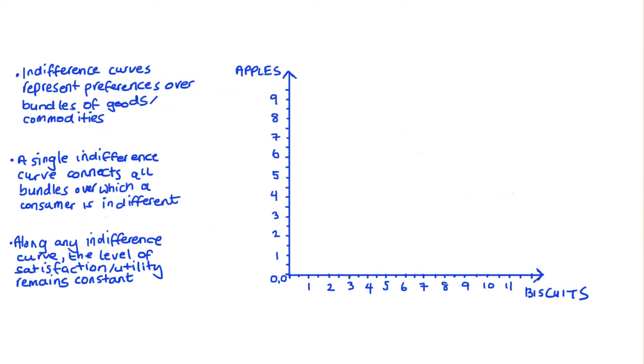So to help make all of this more concrete, let's say that I can consume apples or biscuits. So here on the right you can see I have two axes, and I've labelled each axis, putting apples on the vertical axis and biscuits on the horizontal. Now on this plane here, we can represent all of our possible consumption bundles.